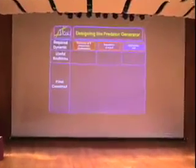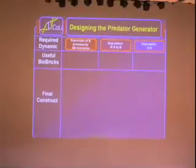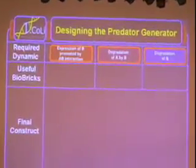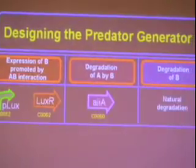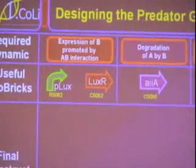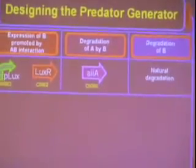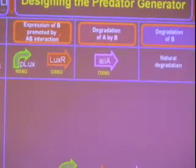Now we'll look at the predator generator cell. So we've got three different dynamics this time: expression of B by the A-B interaction, degradation of A by B, and degradation of B. So we've got some useful BioBricks again. And we've made this. So first, we'll look at expression of B by the A-B interaction.